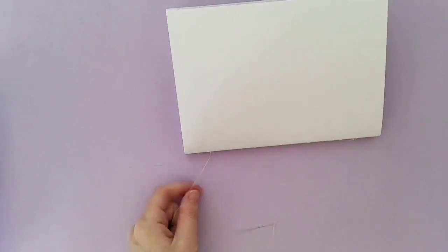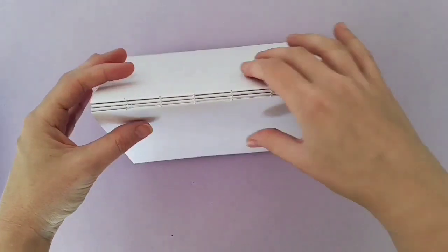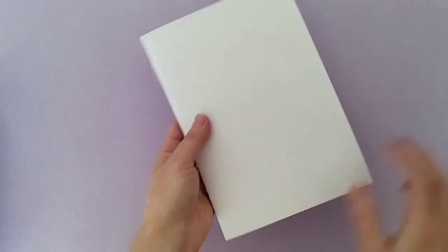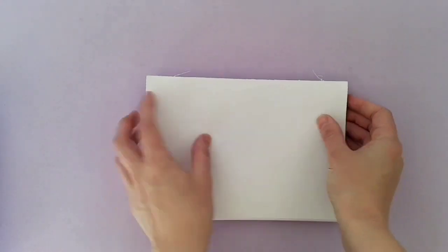Once all of them are sewn together you want to go back through your pages and just turn through and make sure that there's no loose strings. If there is any loose strings, you want to pull them through to the spine of the book to the outside so that when you glue the pages together they will be hidden and they'll also be secured.